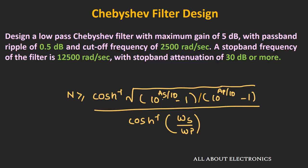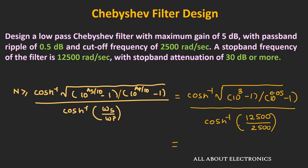From these four parameters, we first decide the order of the filter using the given expression, where As is the stopband attenuation, Ap is the passband ripple, ωs is the stopband cutoff frequency, and ωp is the passband cutoff frequency. Substituting all values, we get n equal to 2.267. Since n must be an integer, we round up to n equal to 3. Therefore, a third order Chebyshev filter is required.